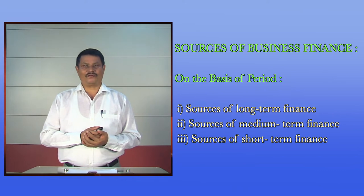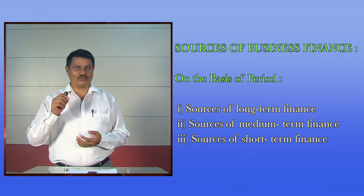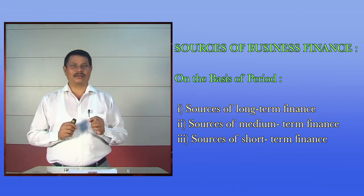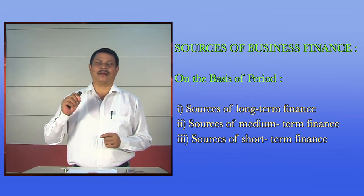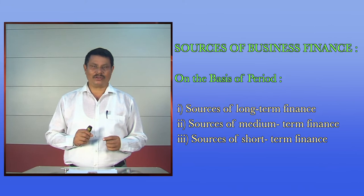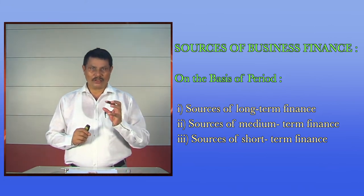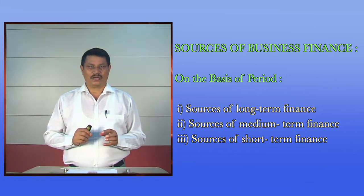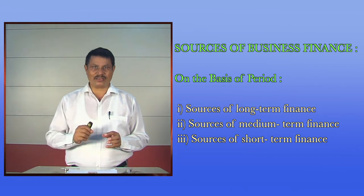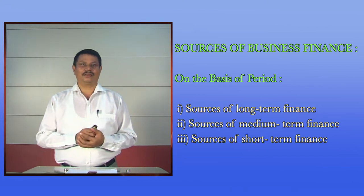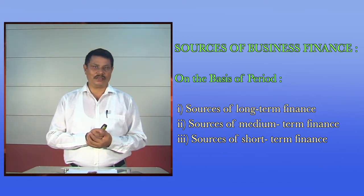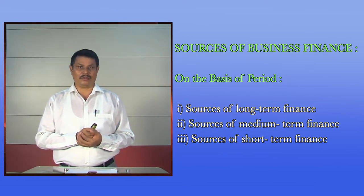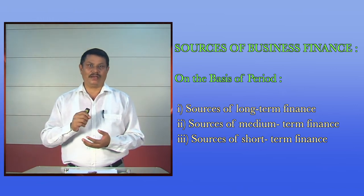The third one is sources of short-term finance. Funds raised for a maximum period of 12 months, that is one year, is called short-term fund. Various sources of short-term funds are cash credit, overdraft, discounting of bills, commercial papers, customers' funds, etc. Certain funds are required in business for meeting day-to-day expenditure, like payment of salaries, payment of trade creditors, etc.